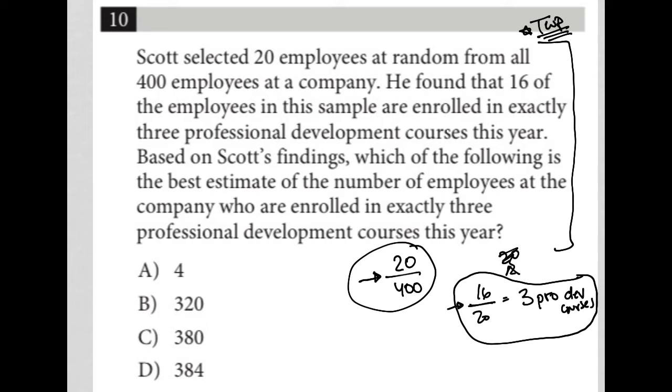So 16 out of 20, I could find a percentage, but instead what I'm going to do is set a proportion. I'm going to say that the proportion of 16 out of 20, if it holds true to the entire group of 400 employees, then that 16 over 20 should be equivalent to X over 400. This is not the only way to do it.